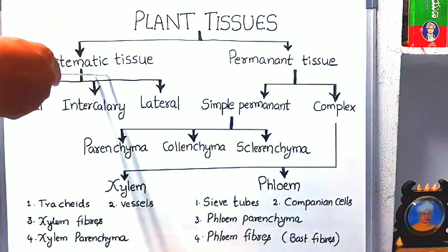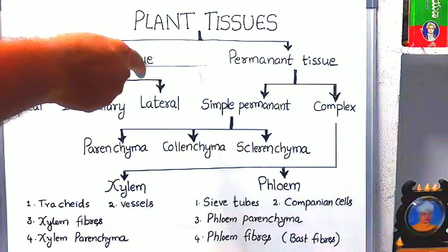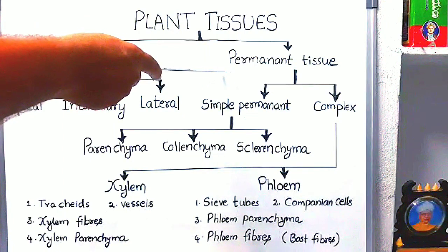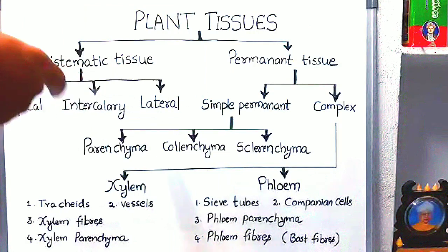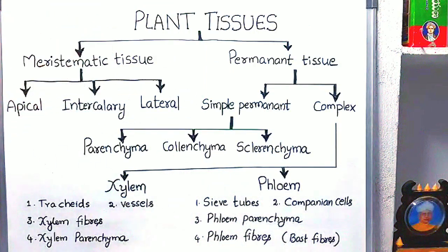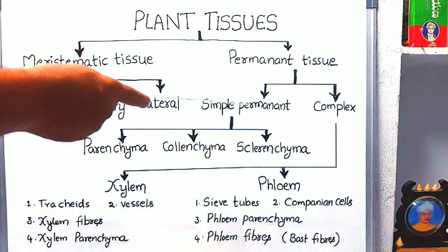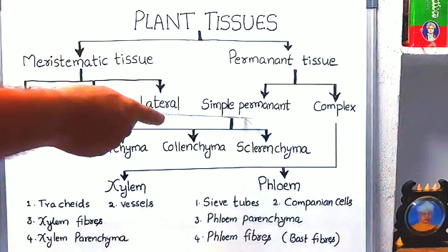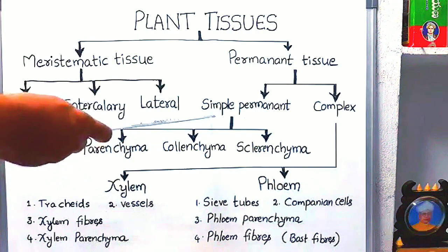Differentiation means to change their structure and function. After the formation of new meristematic cells, those new cells undergo a permanent shape, permanent structure, and permanent function — that is called differentiation. There are two types of permanent tissues: simple permanent tissue and complex permanent tissues.